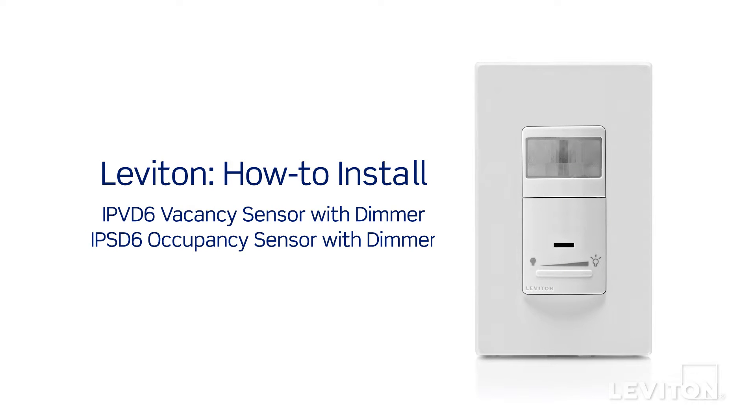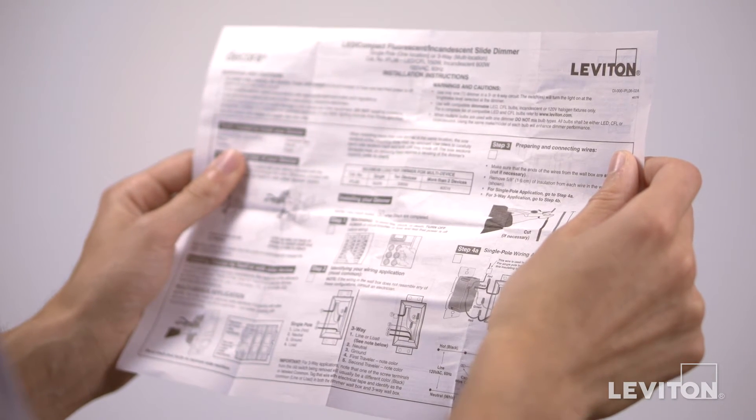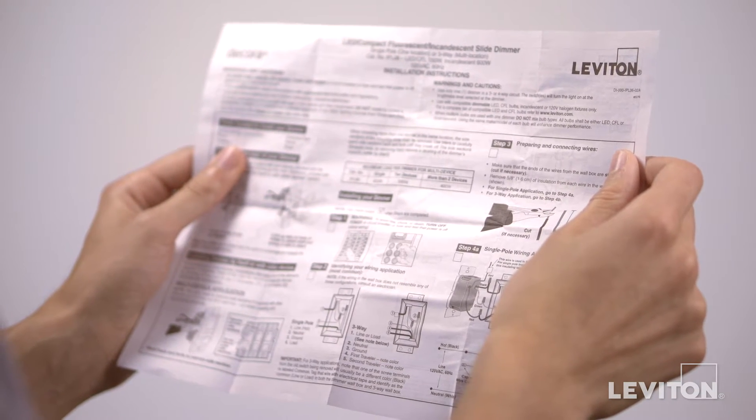This video will demonstrate how to install the Leviton IPVD6 vacancy sensor with dimmer and IPSD6 occupancy sensor with dimmer. Please be certain to follow all wiring instructions and diagrams provided with these products.